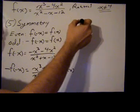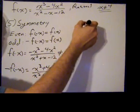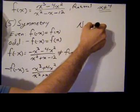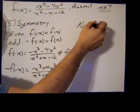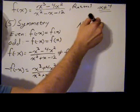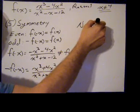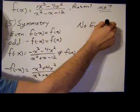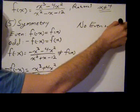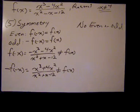So we have no symmetry, at least no even or odd symmetry, let's put it that way. There might be symmetry somewhere, but I doubt it. We're not testing for those, we're just testing for even or odd. So no even or odd symmetry, that's the test for it.